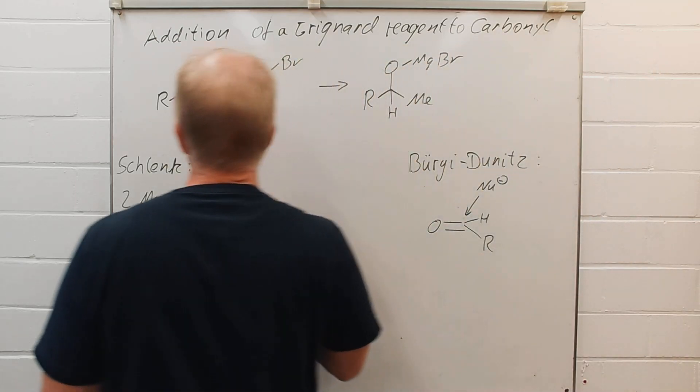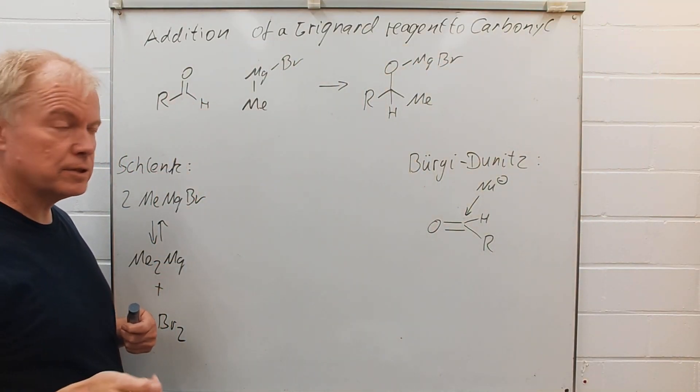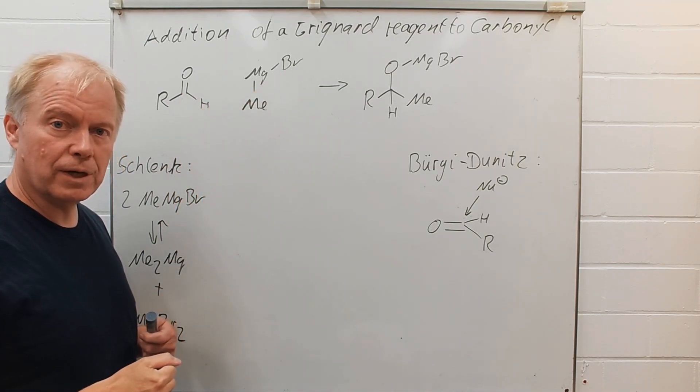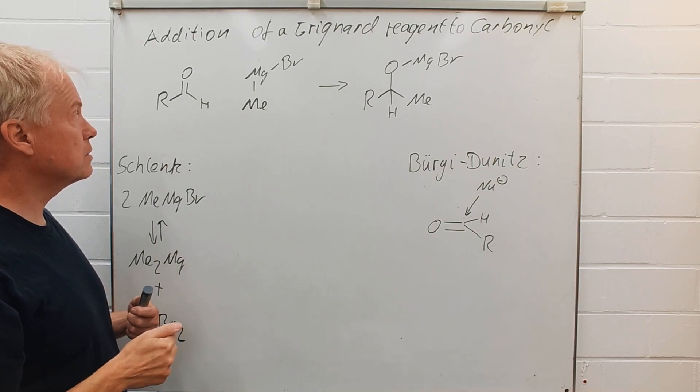Let us choose an aldehyde as the carbonyl compound and methyl magnesium bromide as the Grignard reagent.